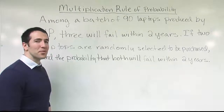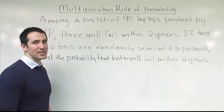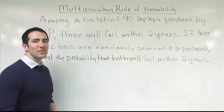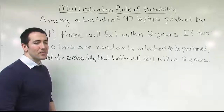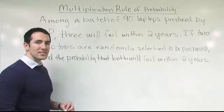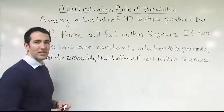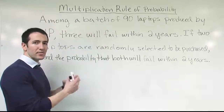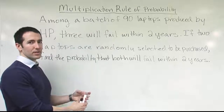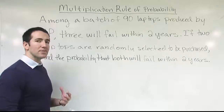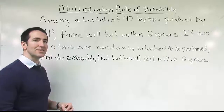We're talking about the multiplication rule of probability, specifically the dependent case. Two events are dependent when the occurrence of one event affects the outcome of the next event — it alters the probability of the next event. The knowledge of one event occurring will change the probability that the other event occurs. Whenever that happens, we're dealing with a dependent scenario.